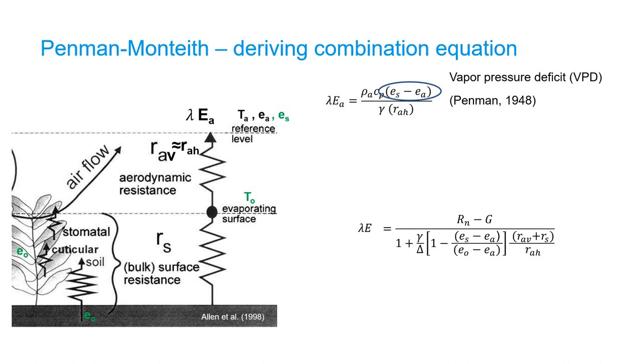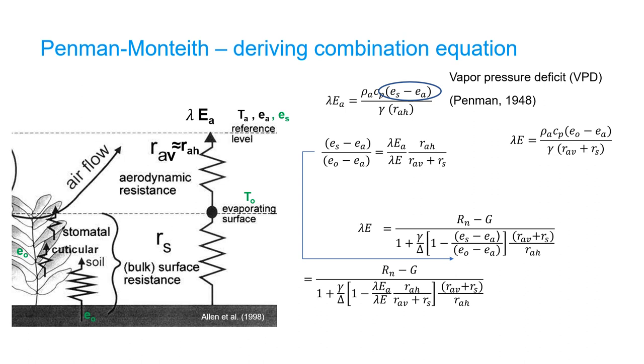With this temporary term, we can estimate the ratio between E-s minus E-a over E-node minus E-a as follows. Replacing this ratio in the previous combination equation to obtain the following.